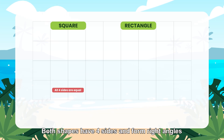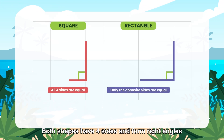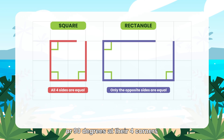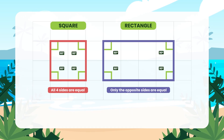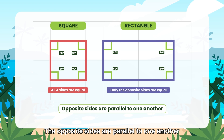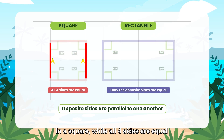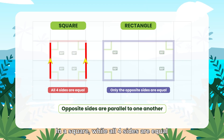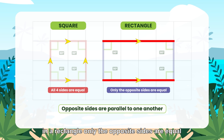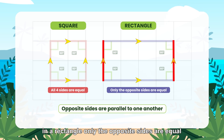Both shapes have four sides and form right angles, or 90 degrees, at their four corners. The opposite sides are parallel to one another. In a square, all four sides are equal, while in a rectangle only the opposite sides are equal.